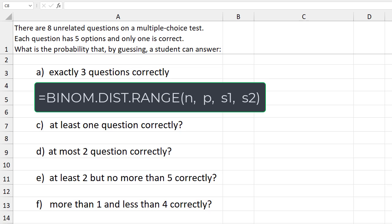The function requires the number of trials, the probability of success, the starting number or lower limit, and the ending number or upper limit.